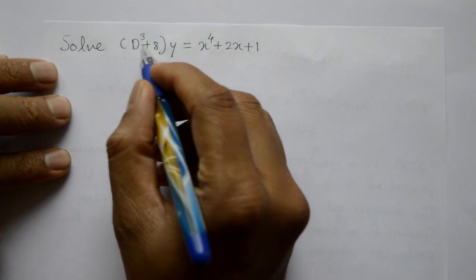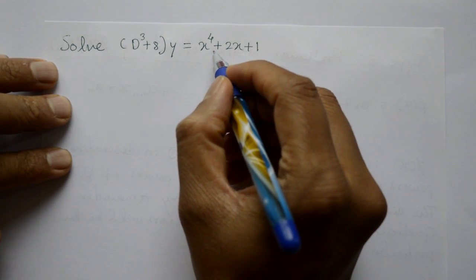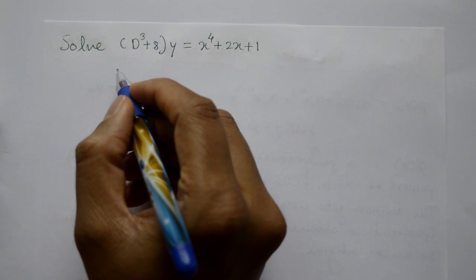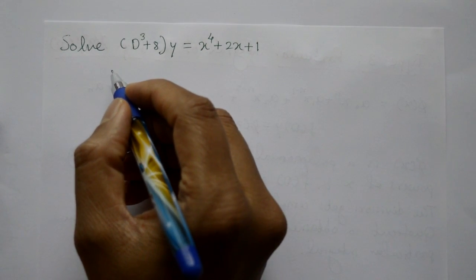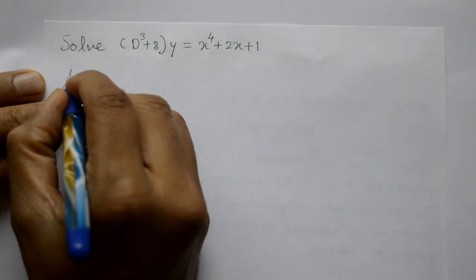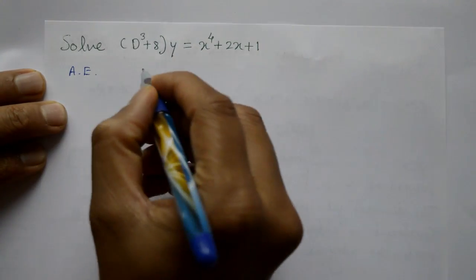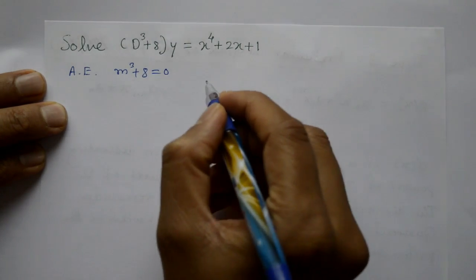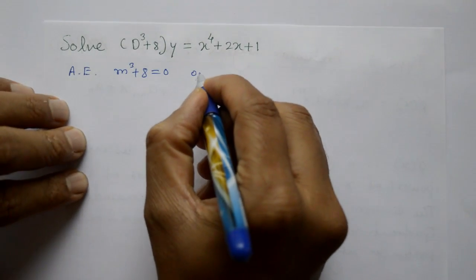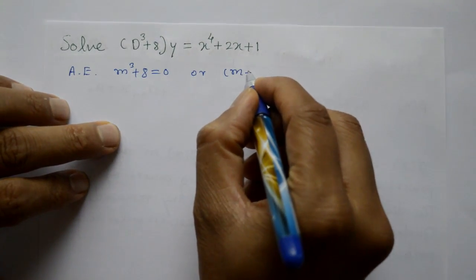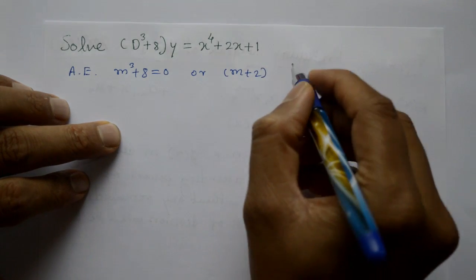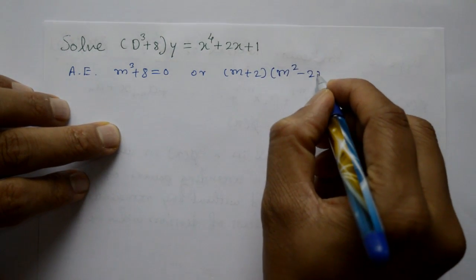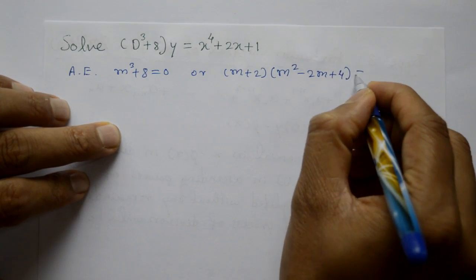Second example: Solve (D³ + 8)y = x⁴ + 2x + 1. Find the complete solution. The auxiliary equation is m³ + 8 = 0, or (m + 2)(m² − 2m + 4) = 0, using the identity a³ + b³ = (a + b)(a² − ab + b²). The first root is m = −2.